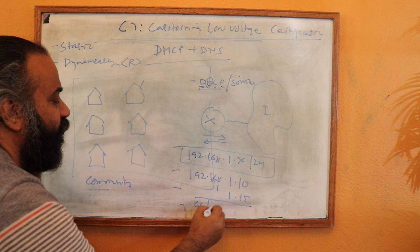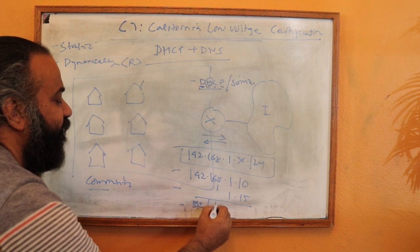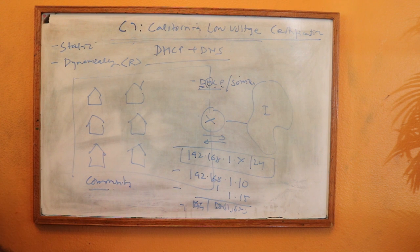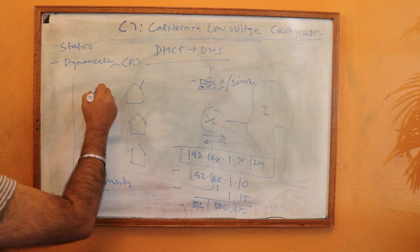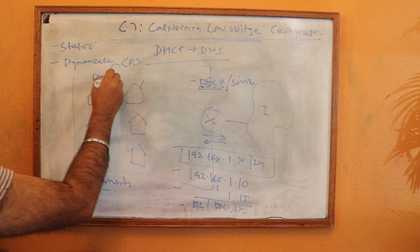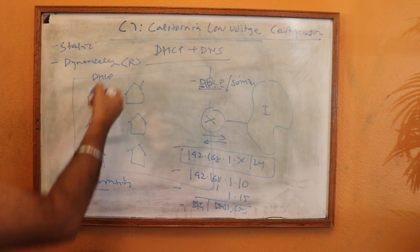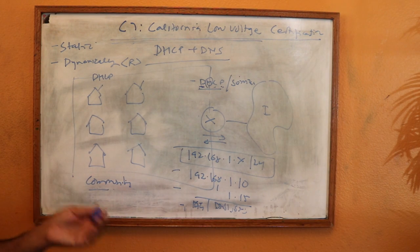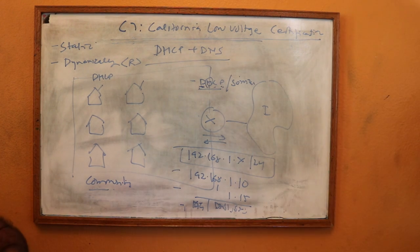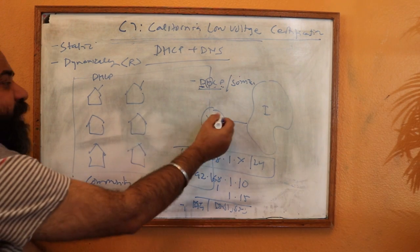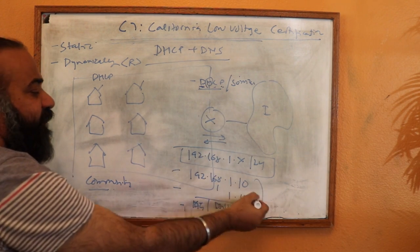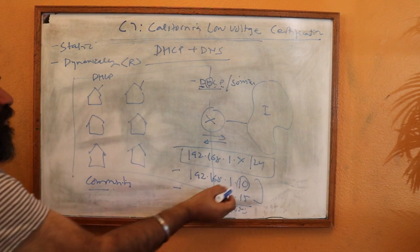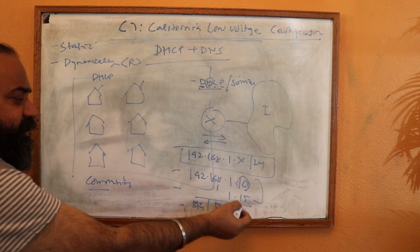The remaining configuration — default gateway, DNS1, DNS2 — goes by default. The moment this service is enabled and your machine is set for DHCP, when your machine boots up it requests an IP address. The DHCP server has a block of free addresses and will assign one. It doesn't necessarily go in strict series — you might be allocated .14, .15, or .1.